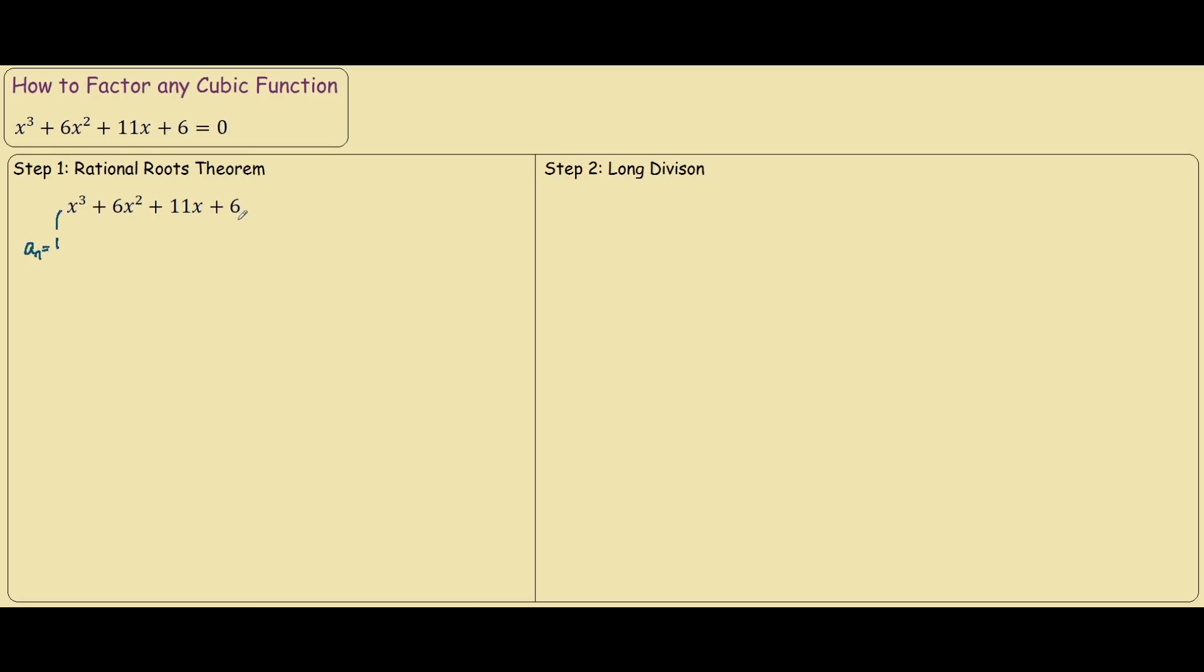And we focus on the constant in the cubic, which is 6, and we call this a0. And what the rational roots theorem says is that we must find all the factors for 1, so in this case it's just 1.